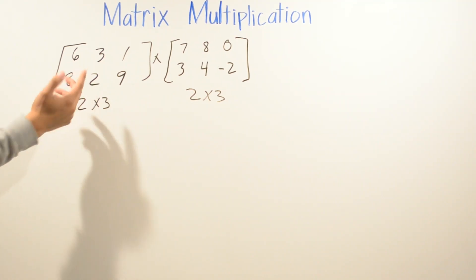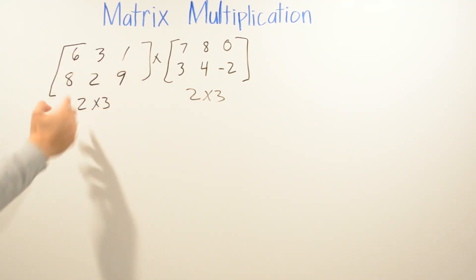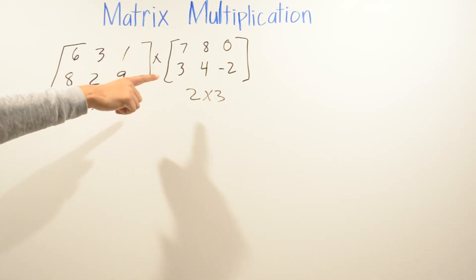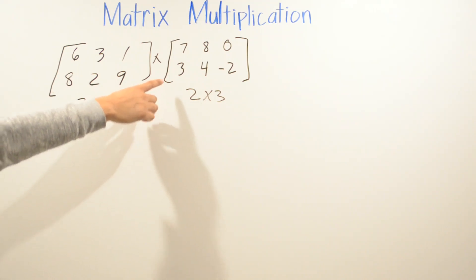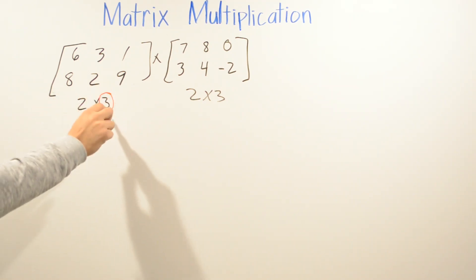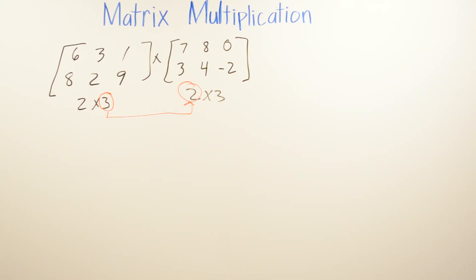In this example, the first matrix has values 6, 3, 1, 8, 2, and 9 — a 2 by 3 matrix. The second matrix has values 7, 8, 0, 3, 4, negative 2 — also a 2 by 3 matrix. Even though they look similar, we must check the rule: the second number of the first matrix is 3, and the first number of the second matrix is 2. Since 3 and 2 are not the same, we cannot multiply these matrices.